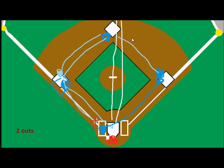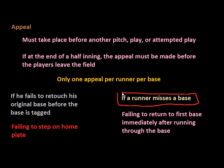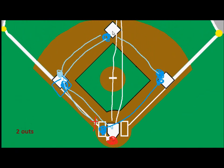However, if the defense was paying attention and knows the rules, they can appeal this play. The runner who started on first base stepped over second base and did not touch it — missing a base is legitimate grounds for an appeal. The second baseman asks the catcher for the ball, steps on second base, and appeals to the umpire, saying the runner stepped over second and continued to third. Because this is a force out on the appeal, the run would not count, as it would be the third out in the inning.